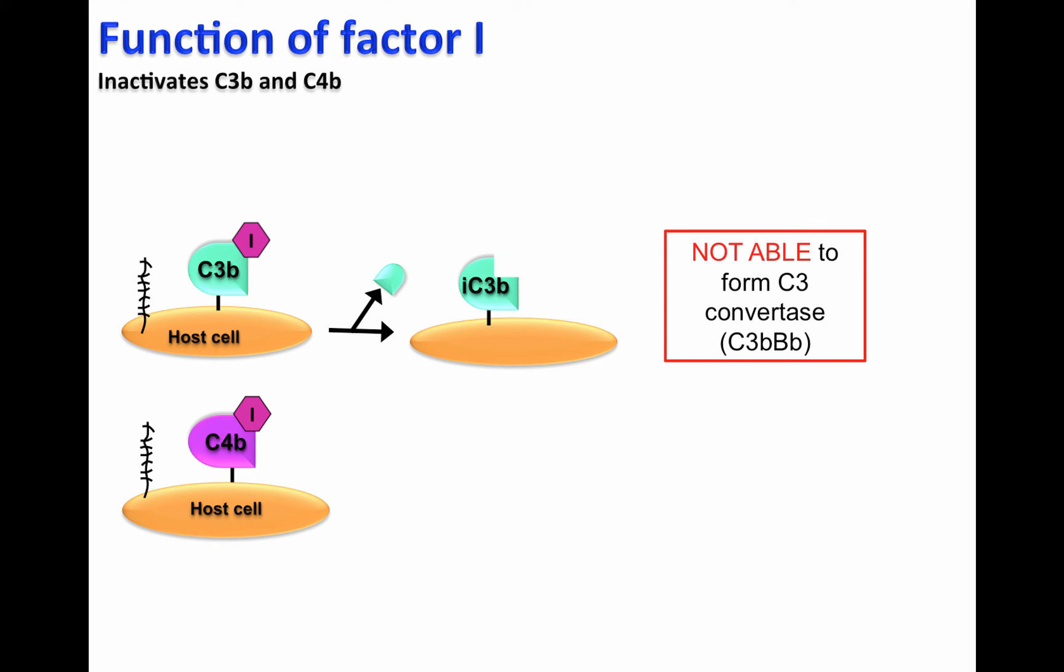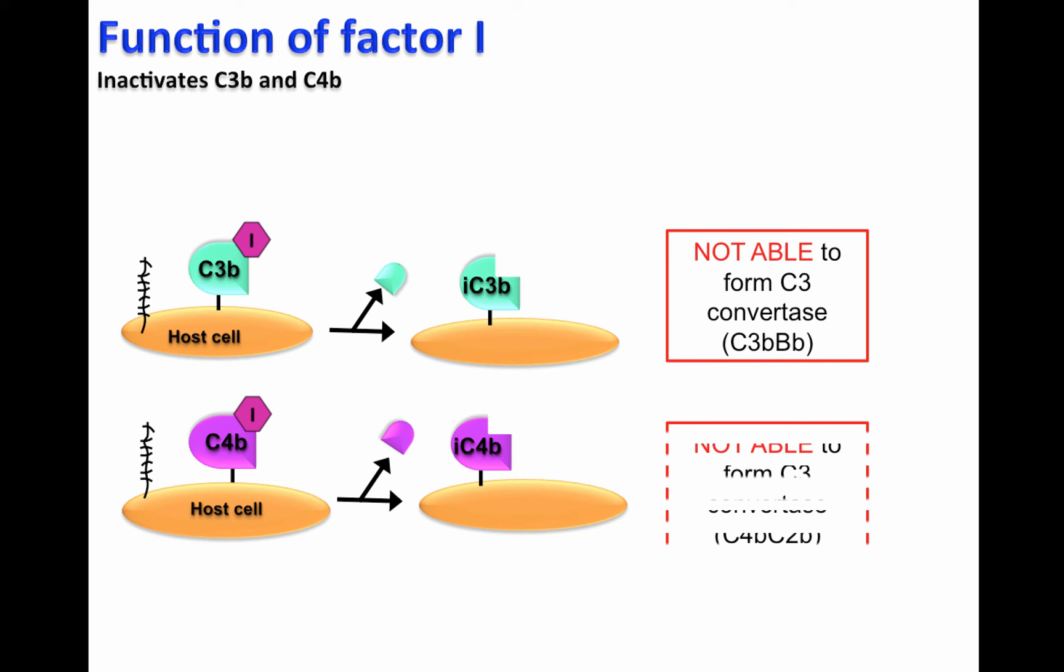Factor I also will cleave C4b, generating the inactive form of C4b called iC4b. This is not able to form the C3 convertase of the classical lectin pathway, C4bC2b.